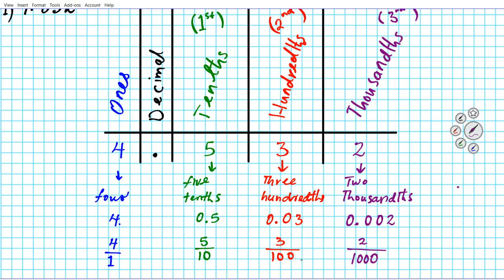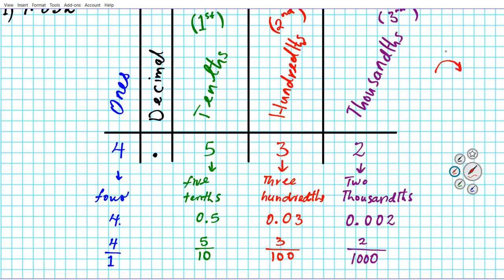A connection you may have noticed: the number of zeros in the denominator tells you the place value of that decimal digit. One zero for 5 tenths — first decimal place. Two zeros for 3 hundredths — second decimal place. Three zeros for 2 thousandths — third decimal place. That's a useful shortcut to remember.